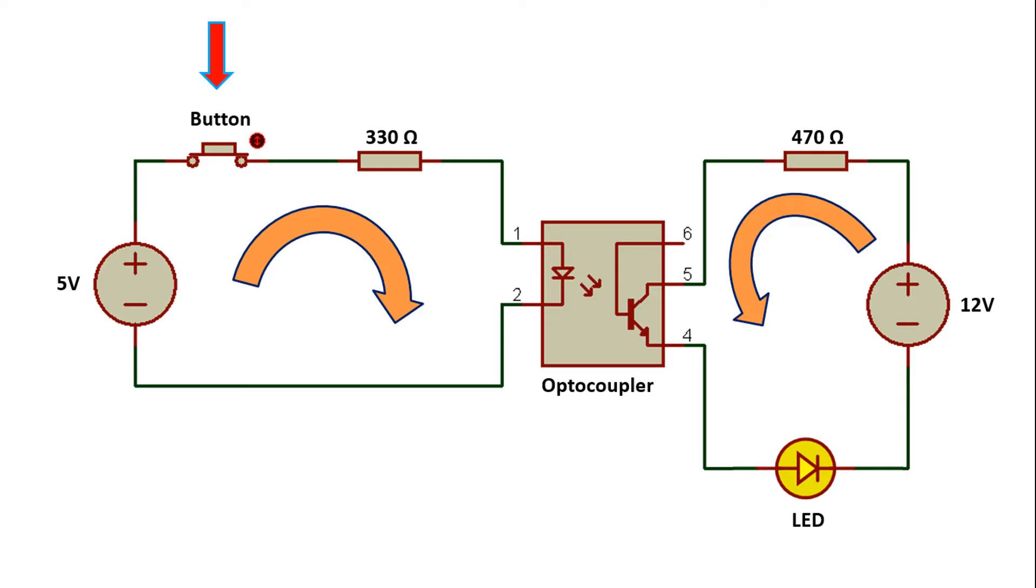With this current, the right LED lights up. Thus, a high current in the right circuit can be controlled with a low current in the left circuit without an electrical connection.